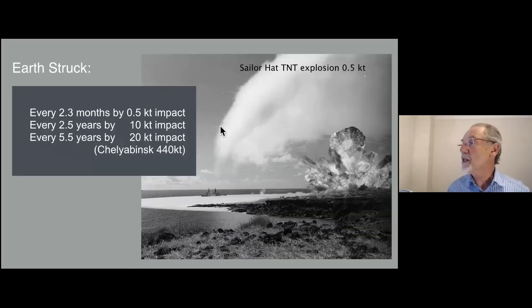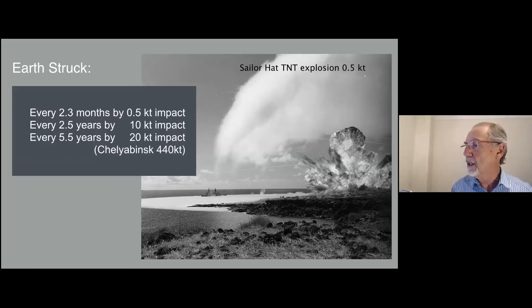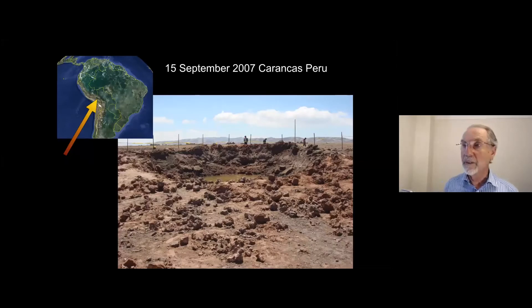And if you want to see what half a kiloton looks like, it looks like this was a land-based conventional explosion. You see the shockwave through the sea. So we see that about every two and a bit months, there is a half kiloton impact. Every two and a half years or so, there's a 10 kiloton impact. And about every five years, a 20 kiloton impact. So that is, of course, most of these will occur over the sea, because 70% of the surface of the Earth is covered in sea.